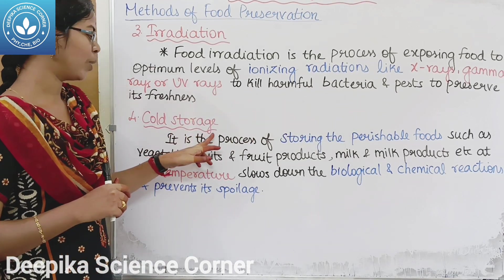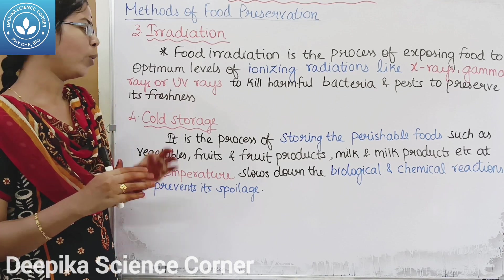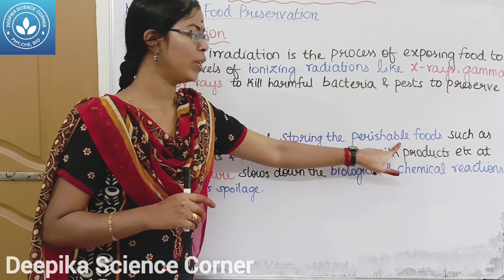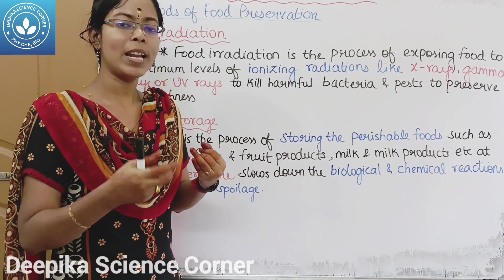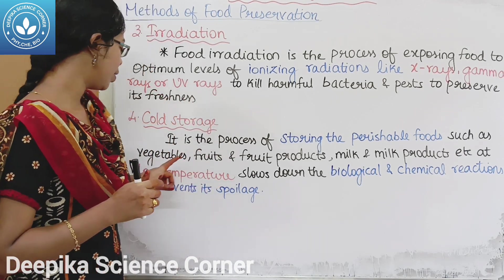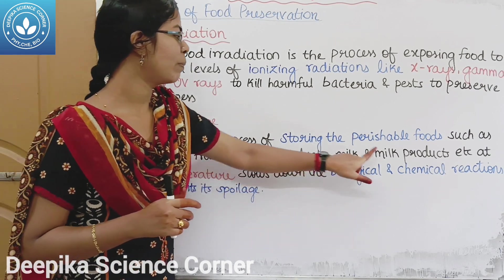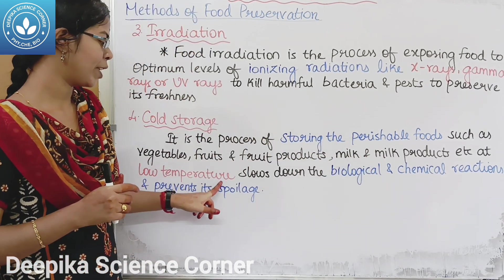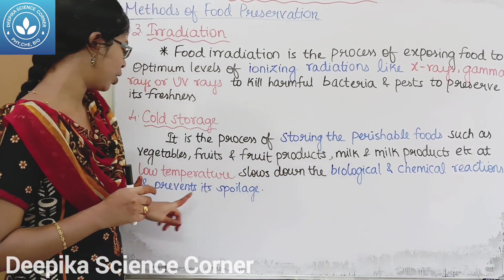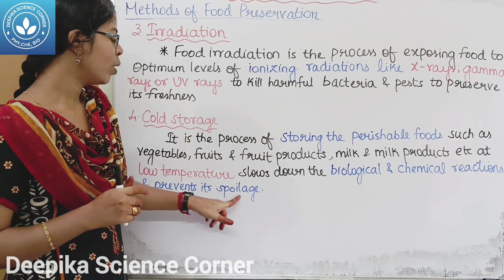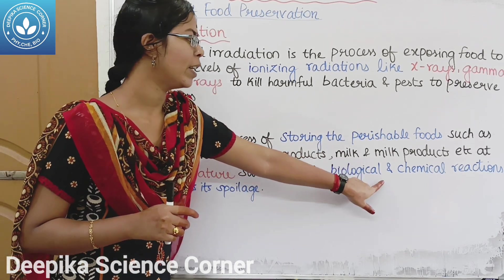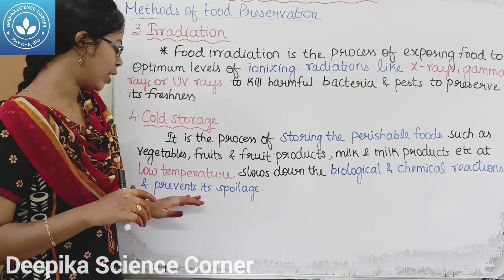The fourth method is cold storage — storing cool food items. It is the storing of perishable food, which is food prone to easier decay and spoilage, in refrigerators to prevent spoilage.